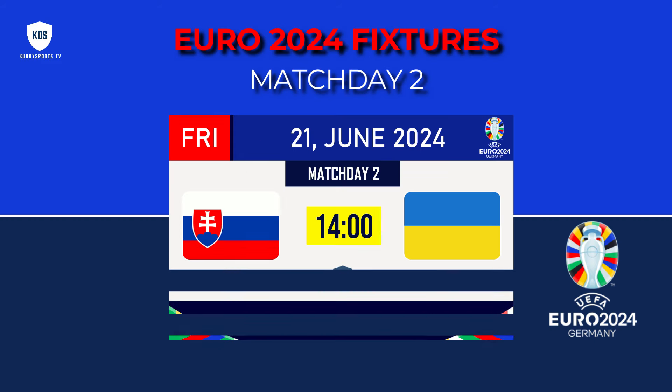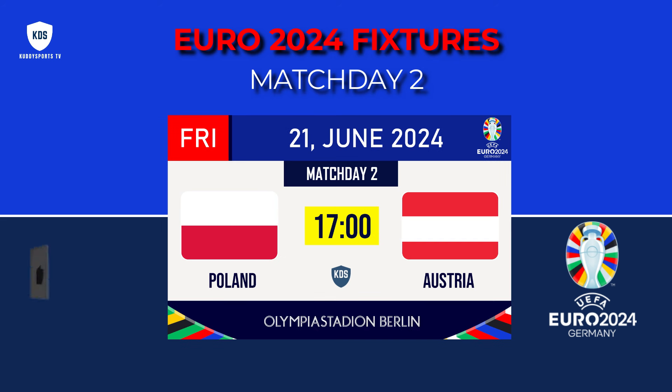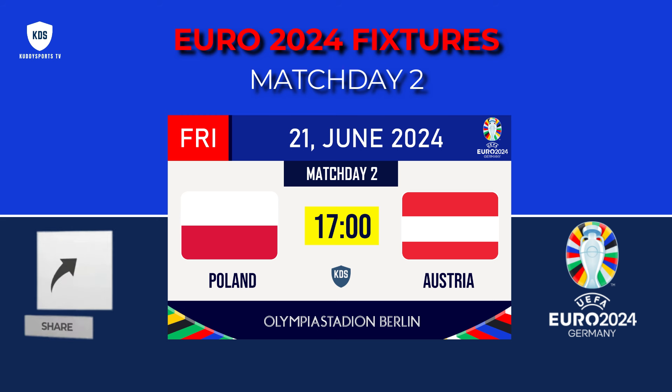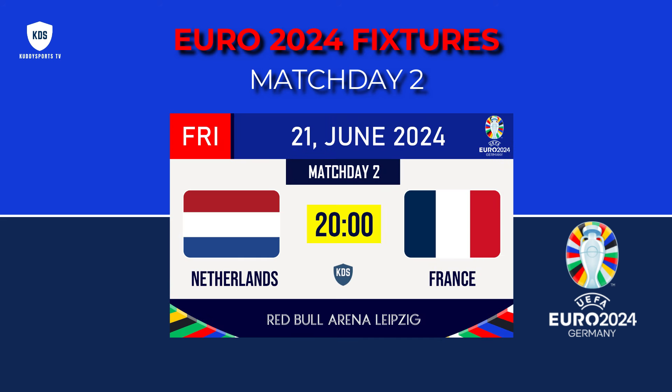On 21 June 2024: Slovakia vs Ukraine, kick-off time is 1400 GMT and 2 o'clock UK time. Poland vs Austria, kick-off time is 1700 GMT and 5 o'clock UK time. Netherlands vs France, kick-off time is 2000 GMT and 8 o'clock UK time.